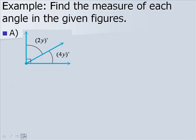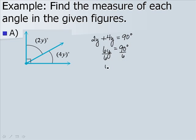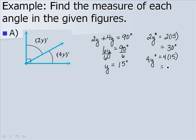Now let's look at an example. We want to find the measure of each angle in the given figures. In this figure, we have two angles that sum to 90 degrees, as indicated by our right angle box. So we add the angles: 2y plus 4y equals 90 degrees. So 6y equals 90 degrees. Dividing both by 6, y equals 15 degrees. Our first angle is 2 times 15, or 30 degrees, and our second angle is 4 times 15, or 60 degrees.